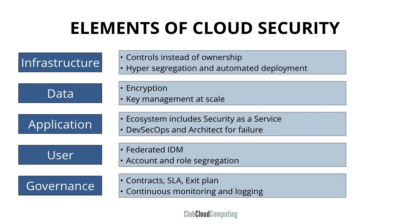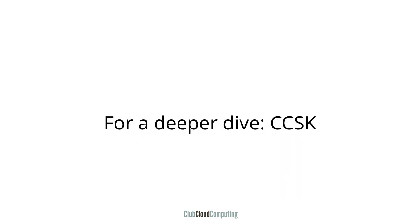So this sums up what, in my opinion, are the five major elements of cloud security, somewhat in historical or chronological order of appearance. Cloud security is really about understanding all of these in a lot of detail. If you want a deeper dive into all of these areas, I definitely suggest you have a look at the Certificate of Cloud Security Knowledge — CCSK for short. Thanks for watching. My name is Peter van Eyck and this is the YouTube channel Club Cloud Computing. Please like the video and subscribe to the channel.